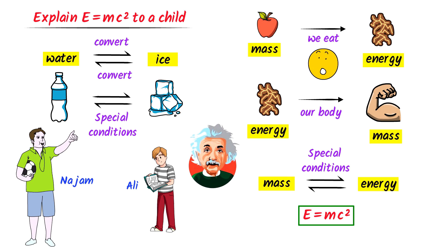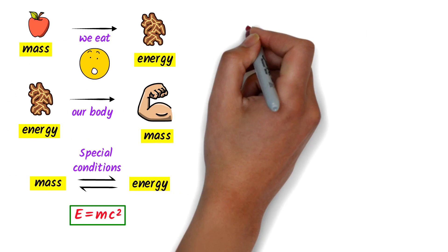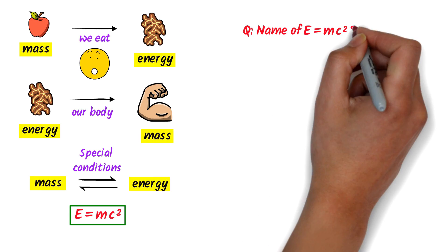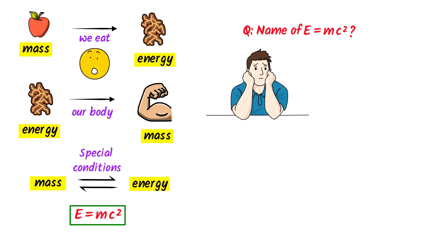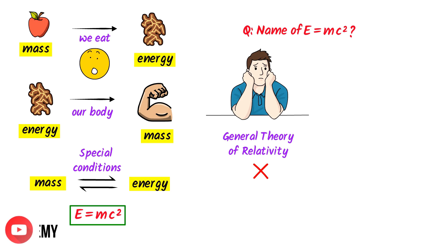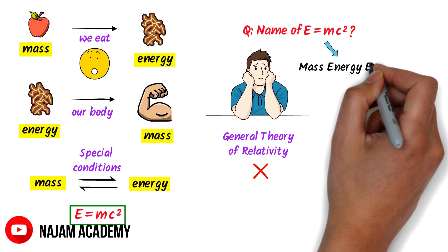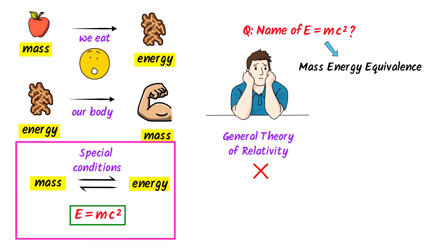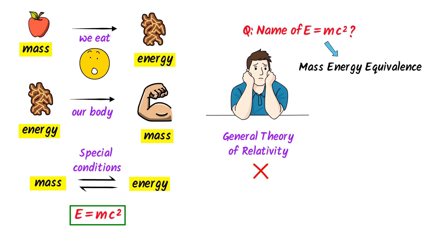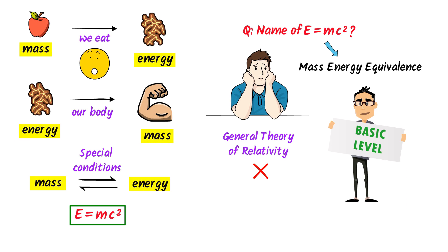Let me teach you one of my favorite questions which 90% of students are not understanding: what is the name of this equation, E equals mc squared? Even talented students say that it is the general theory of relativity, which is totally wrong. The name of this equation is the mass-energy equivalence equation. According to E equals mc squared, we can convert mass into energy and energy into mass. I teach this concept at a very basic level.